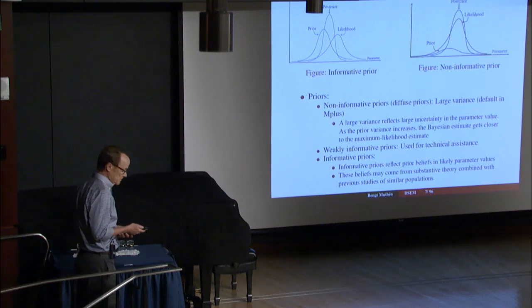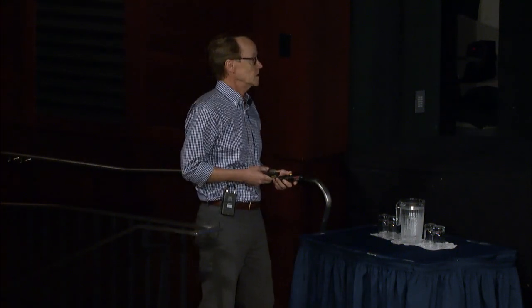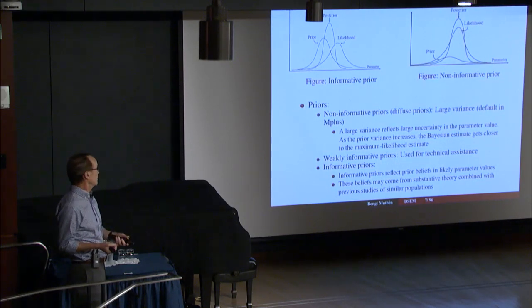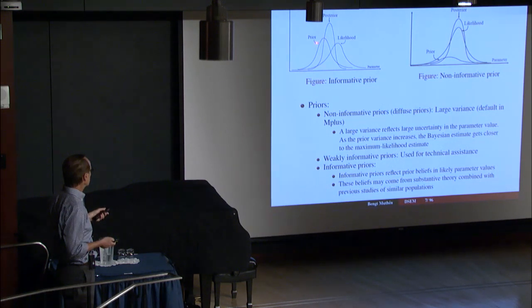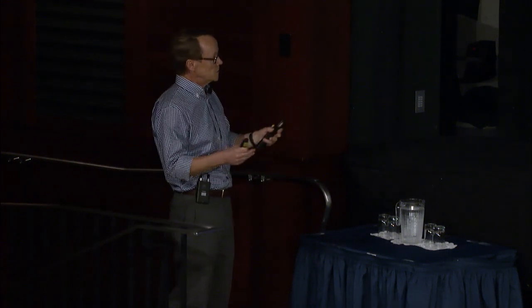Bayesians consider parameters as distributions — as random variables that have a prior distribution, where the most likely value is at the peak of the prior. Based on previous analyses and substantive theories, you have a fairly good notion about approximately what the parameter value might be. The peak is here, but you're not saying you know exactly where it is — you put a little variance around it. The smaller the variance, the stronger your prior belief; the larger the variance, the less you know where the estimate would land.